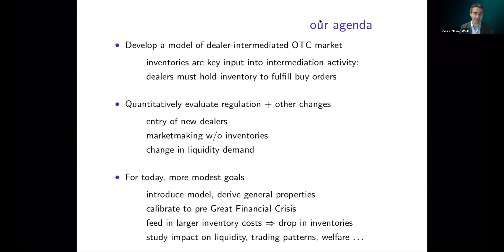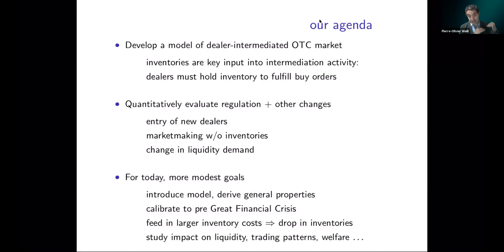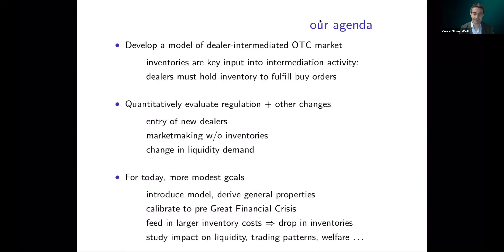What we're presenting today is work in progress. We'll introduce the model, derive its general properties, and show a preliminary calibration. We'll calibrate the model to pre-financial crisis data, then feed in an increase in inventory costs that creates a drop in inventory similar to what we observed, and study the impact on liquidity, trading patterns, and wealth. What will be missing from the calibration is the substitution away from inventory-based trading technology toward non-inventory-based trading — something we'd like to do in the future.